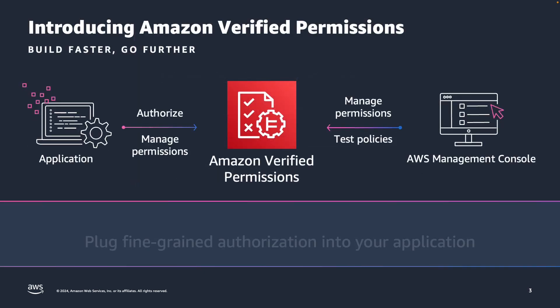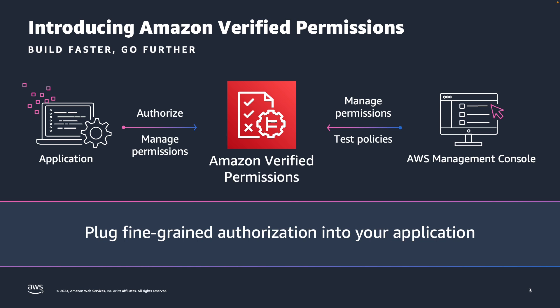Amazon Verified Permissions provides fine-grained authorization as a service. It provides a policy administration point to build and test policies, and a policy decision point to provide runtime authorization decisions to the applications that you build.